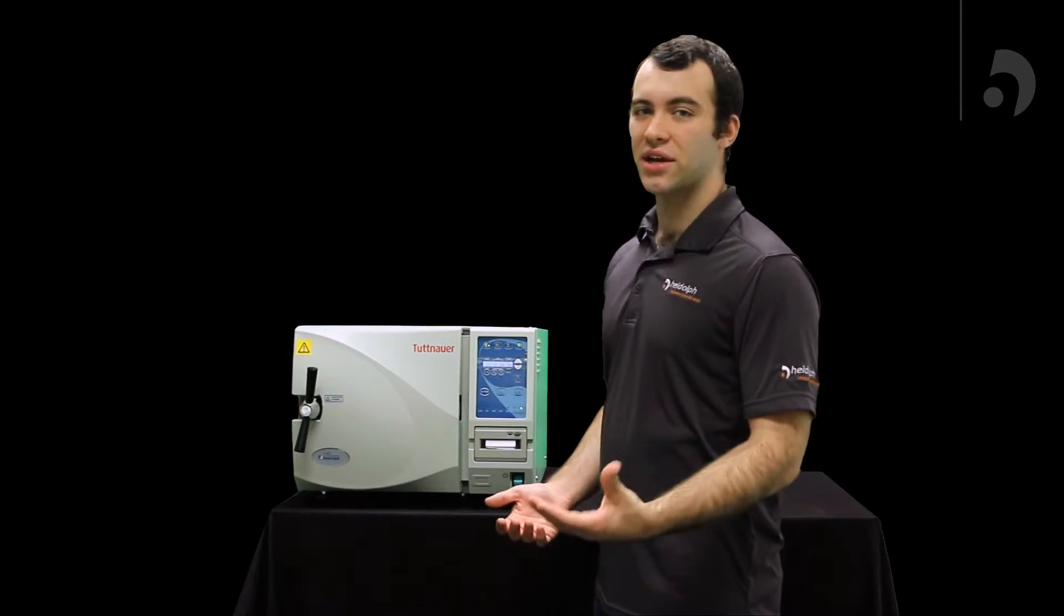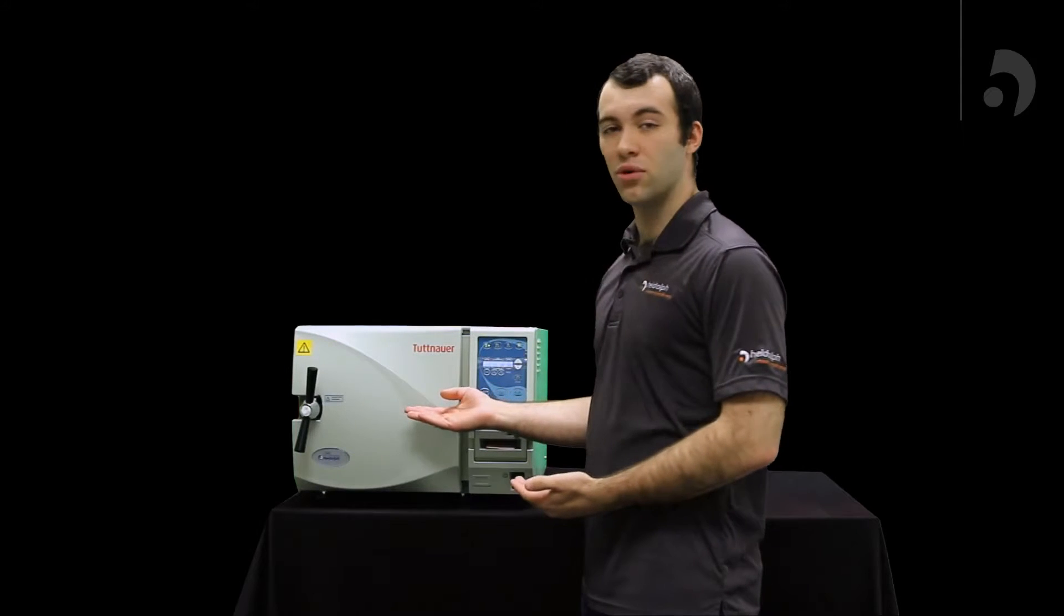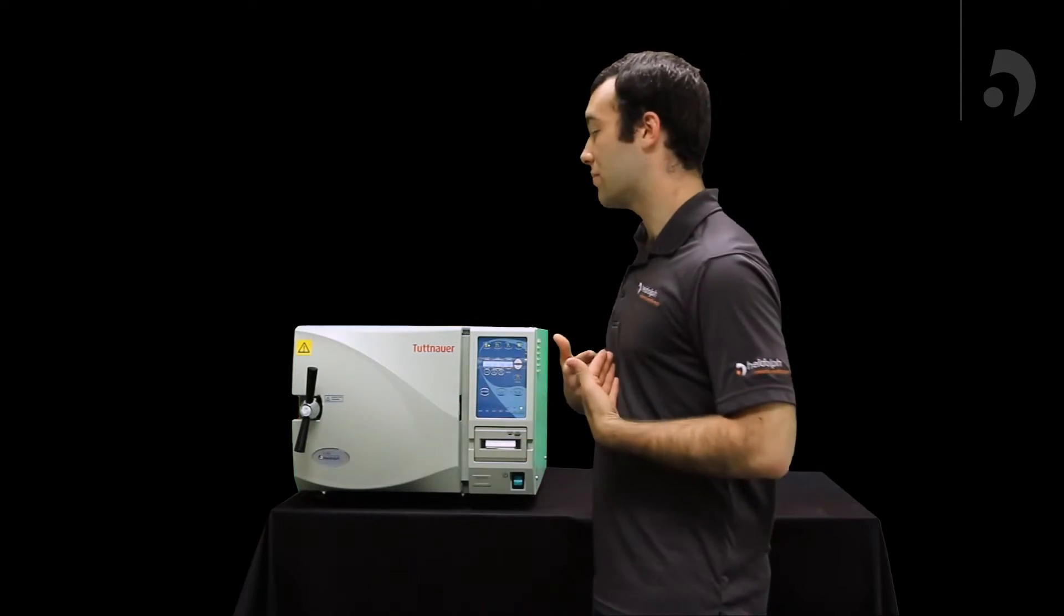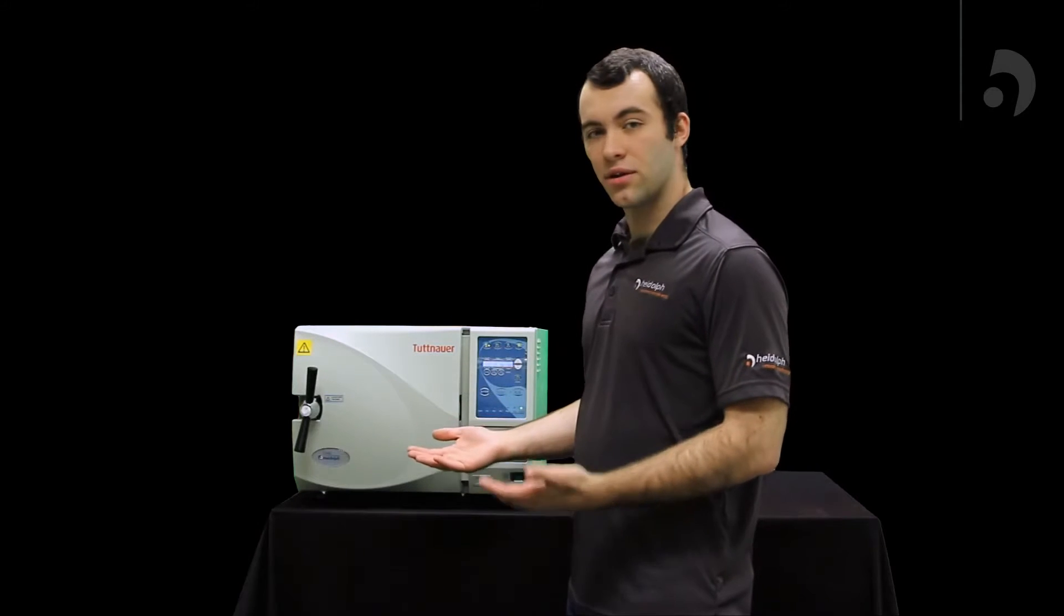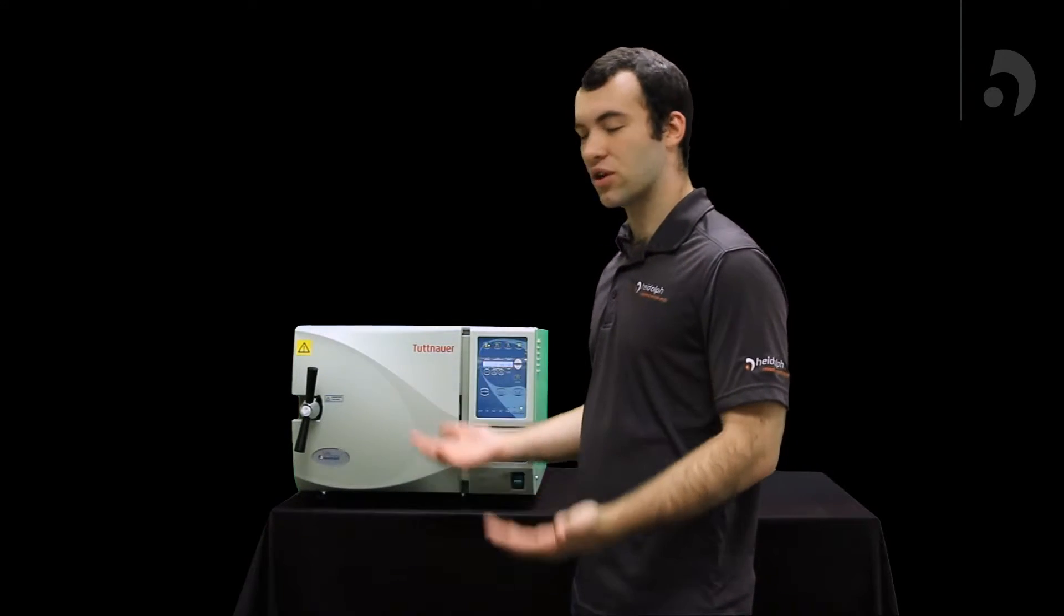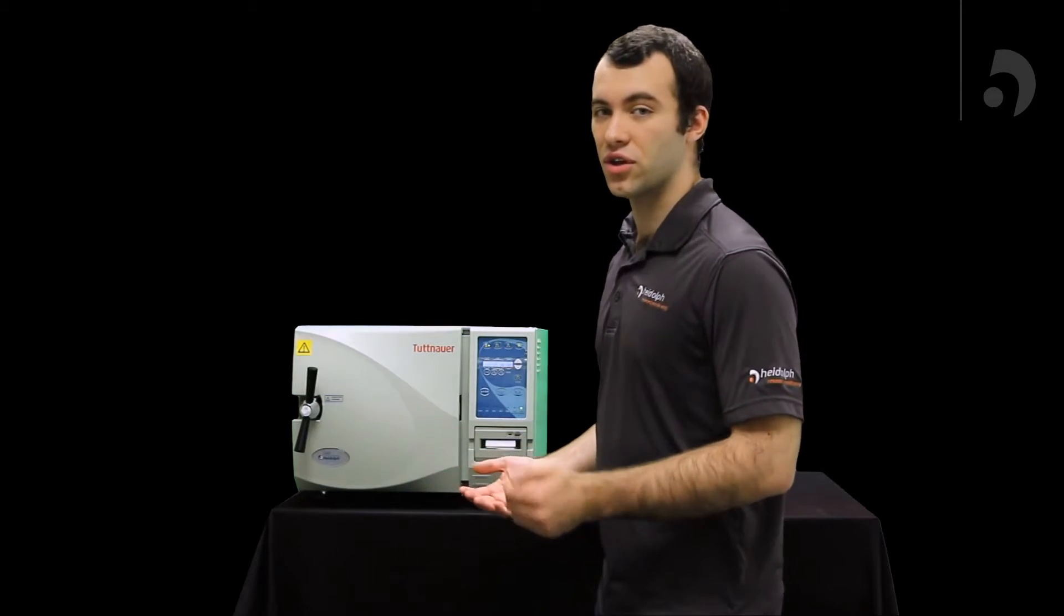So in order to run the dry cycle, we're first going to put in a simple lab tool or beaker. In my case, I put in a scalpel. And we're just going to sterilize it through a normal process and make sure it comes out all right. And if it does, you know you're good to go.